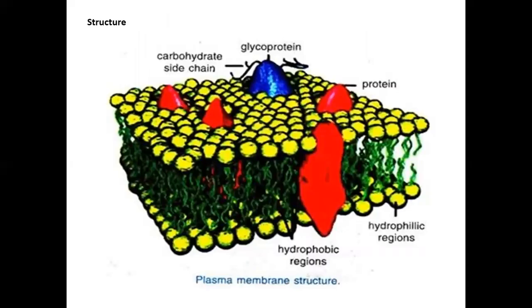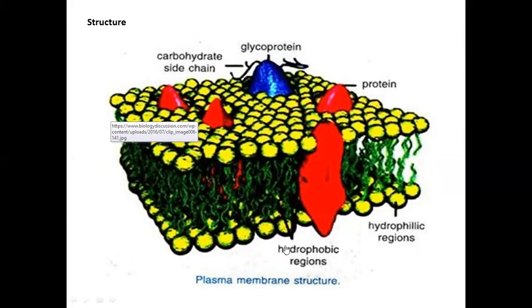The plasma membrane structure includes glycoproteins, carbohydrate chains, proteins, and hydrophobic and hydrophilic regions.